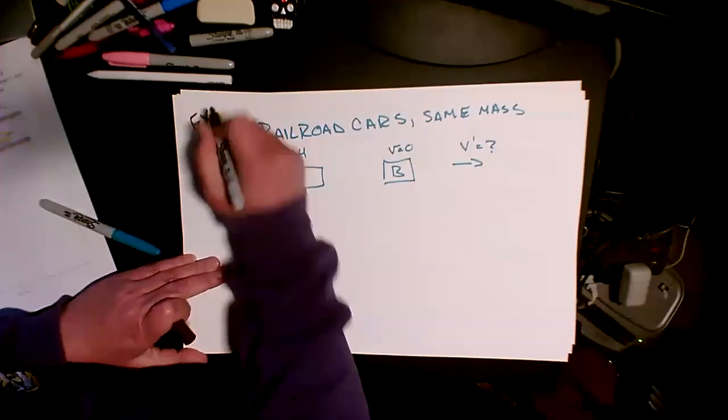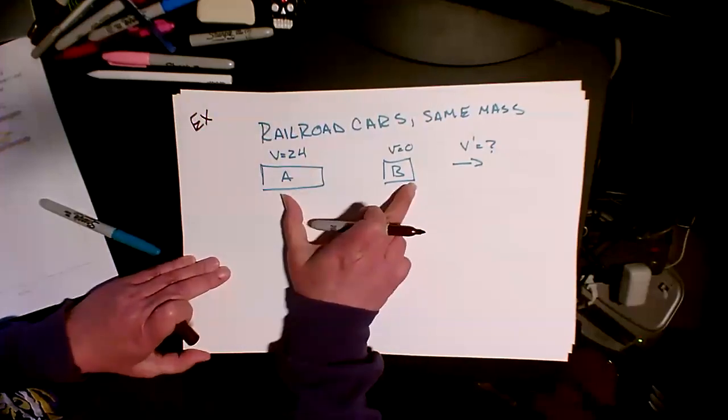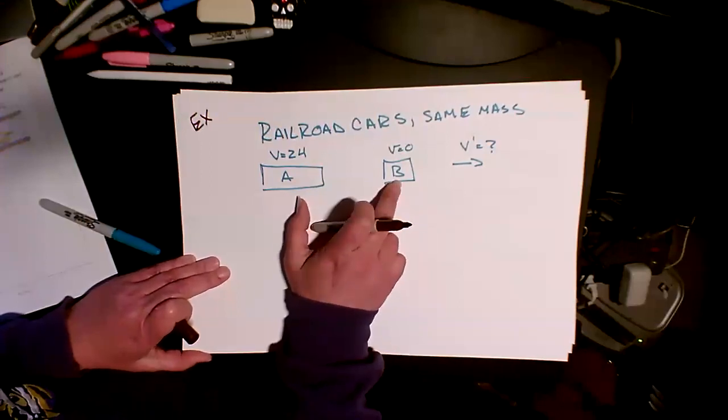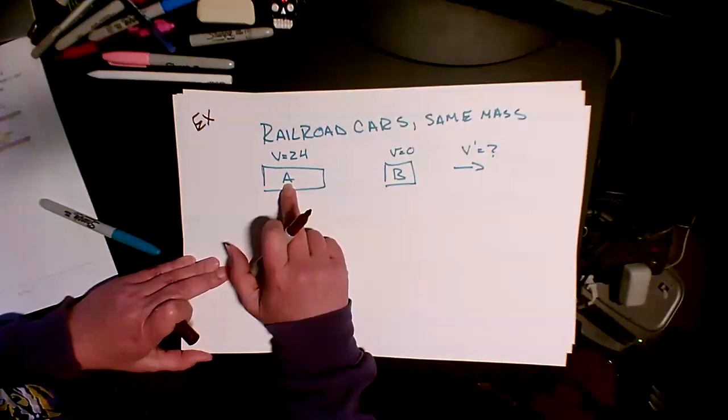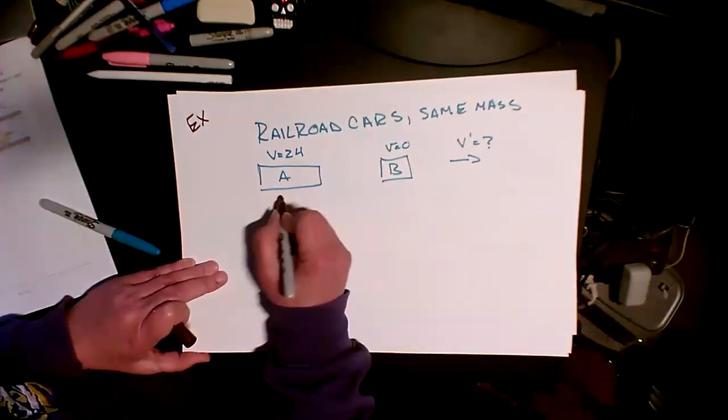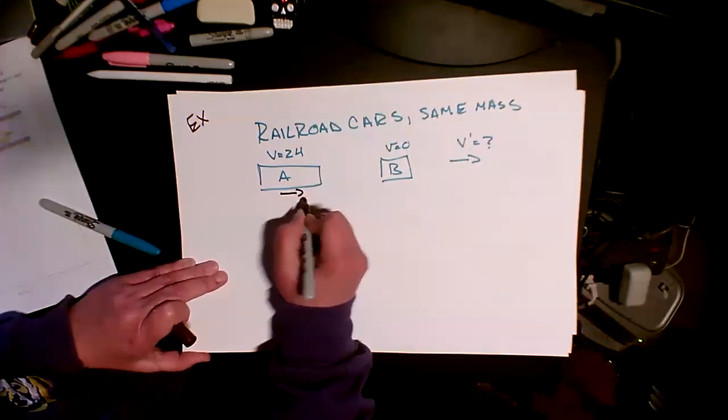So these are two things sticking. Believe it or not, these two railroad cars have the same mass. And this one is just staying put. And this one has this initial velocity of one meter per second. So the direction of its motion is that way.